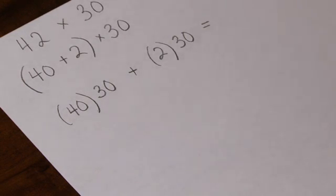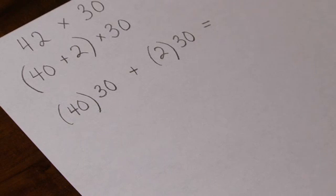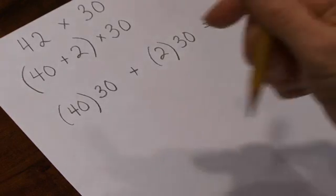40 taken 20 times is another 400. 40 taken 30 times is another 400. So 40 taken 30 times equals 400 plus 400 plus 400, or 1,200.